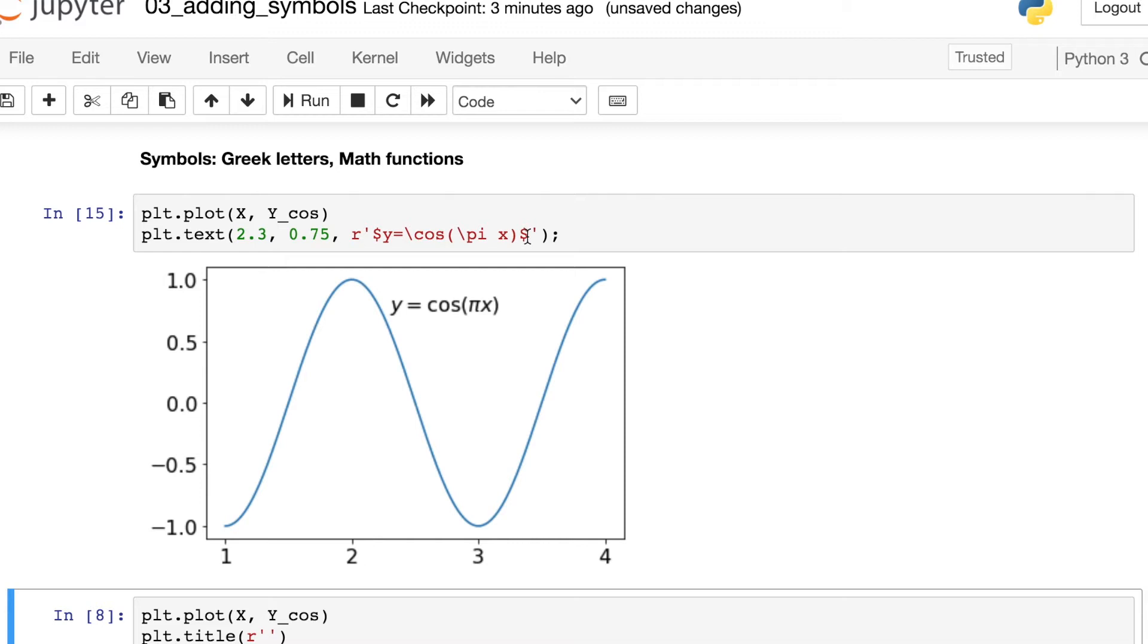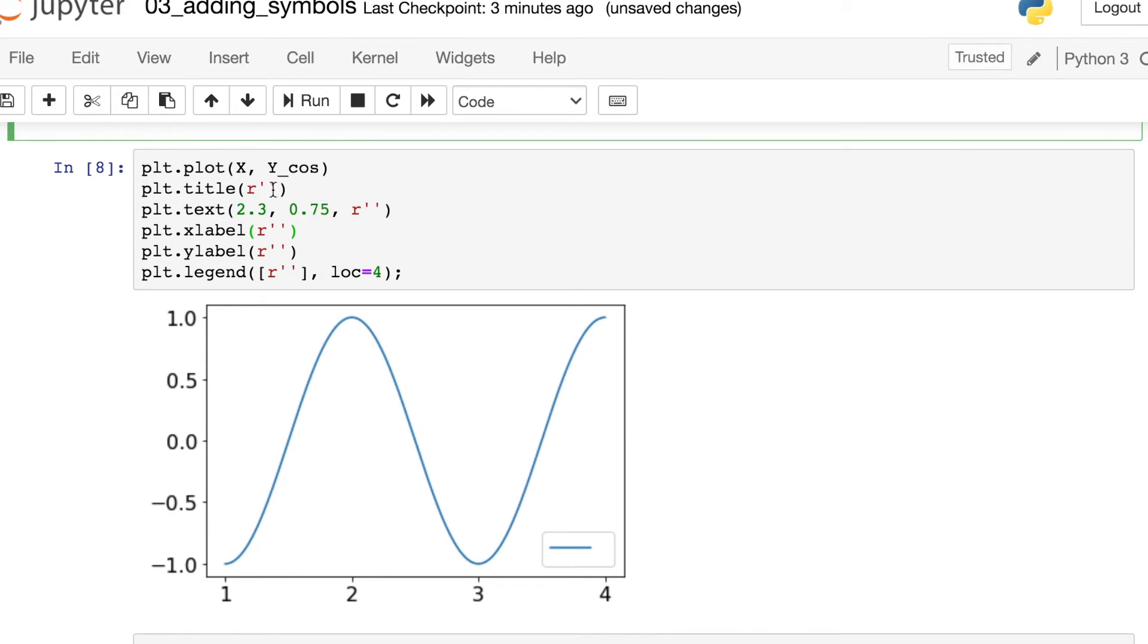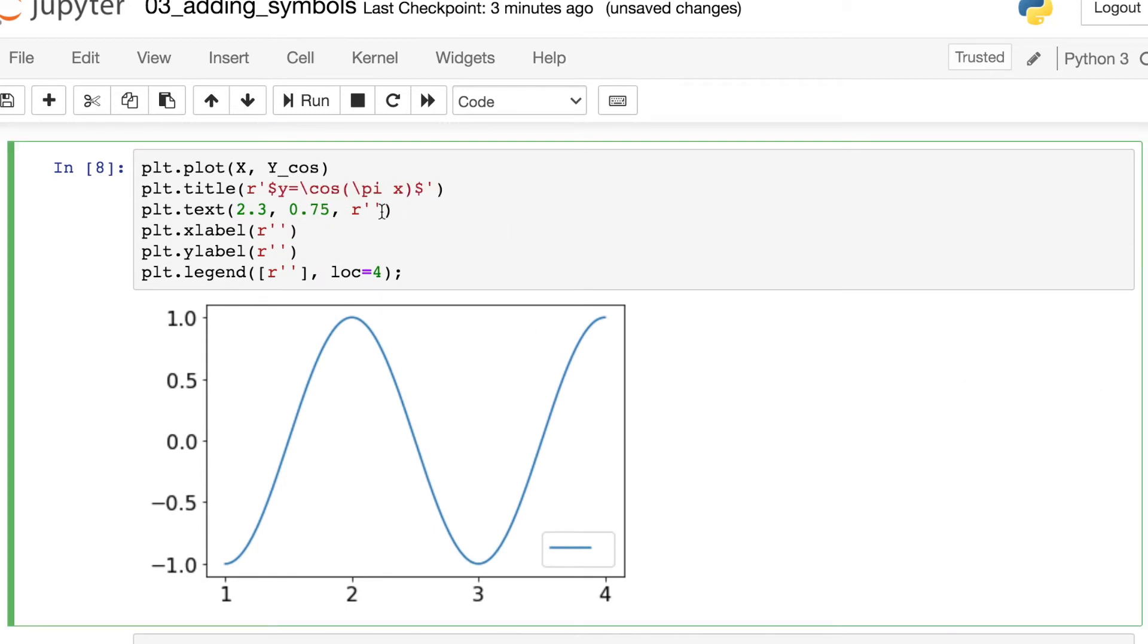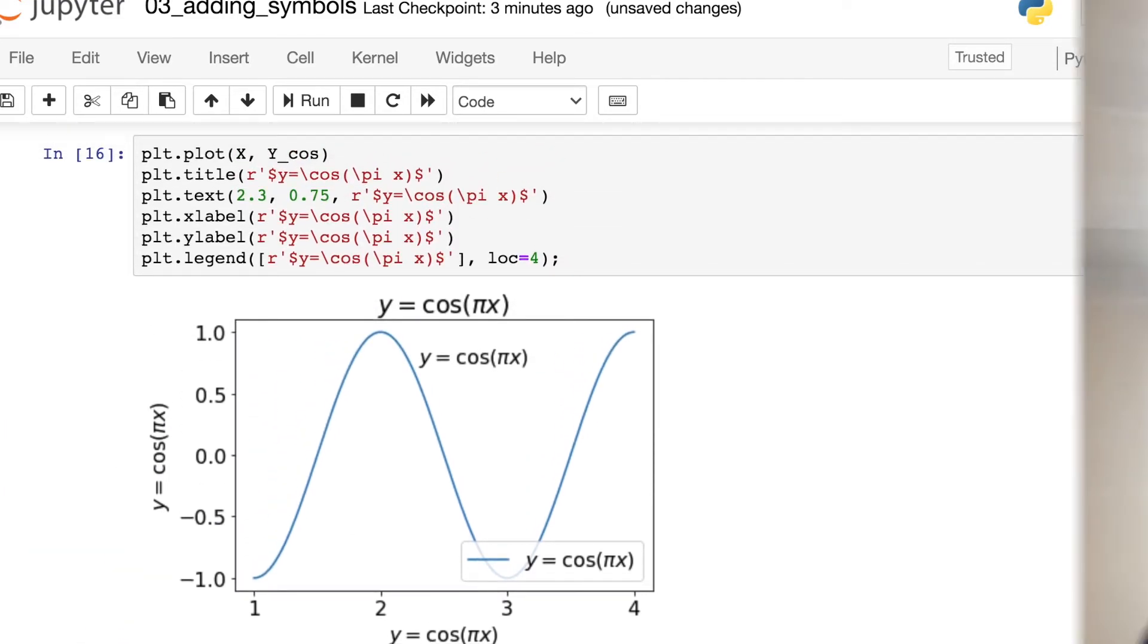And like I mentioned in the beginning of the video, this isn't just for annotations or titles. You can actually use this throughout your matplotlib figure. So the title, the text, the labels, the legends, all of it. You can use this R prefix for your string and then surround your function with these two dollar signs in order to produce mathematical symbols and formulas.